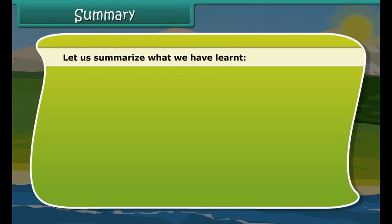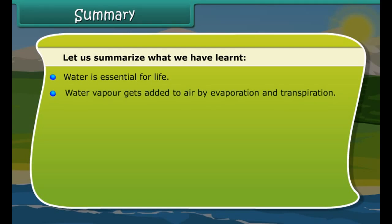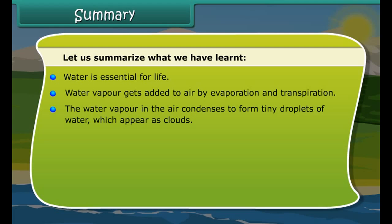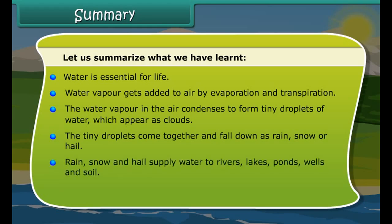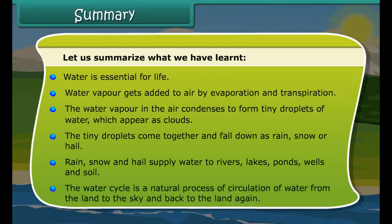Let us summarize what we have learned. Water is essential for life. Water vapor gets added to air by evaporation and transpiration. The water vapor in the air condenses to form tiny droplets of water, which appear as clouds. The tiny droplets come together and fall down as rain, snow or hail, which supply water to rivers, lakes, ponds, wells and soil. The water cycle is a natural process of circulation of water from the land to the sky and back to the land again.